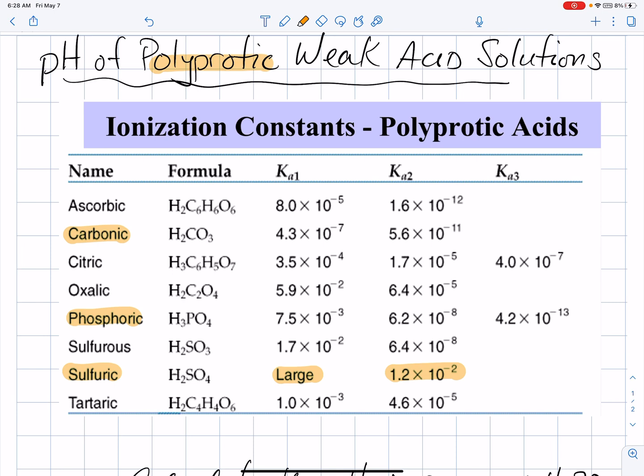So, calculating pH for sulfuric acid is a little bit different than what we're going to do here, and I've addressed that in a separate video on my YouTube channel. So, here we're only going to look at the polyprotic weak acids, the acids where the first Ka value is small.